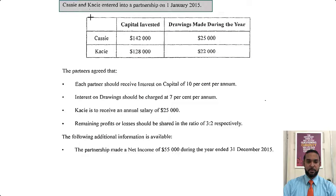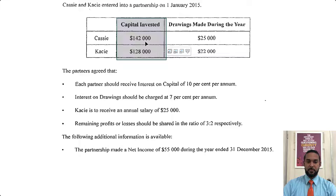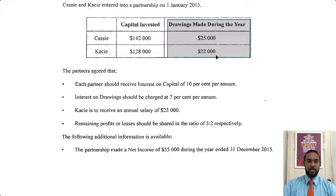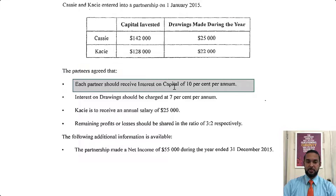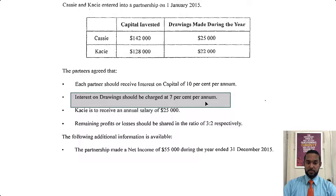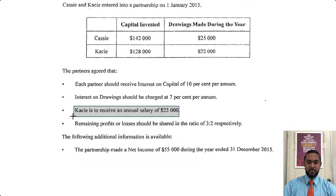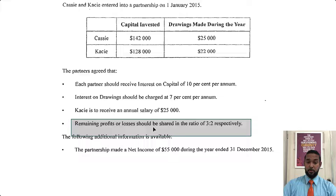So we have a partnership question. Cassie and Casey entered into the partnership on 1 Jan 2015. Capital invested: Cassie is $142,000 and Casey is $128,000. We have some drawings made during the year — $25,000 for Cassie and $22,000 for Casey. The partners agree the following: each partner should receive interest on capital of 10% per annum, interest on drawings should be charged at 7% per annum, Casey is to receive an annual salary of $25,000, and remaining profits or losses should be shared in the ratio of 3 to 2, respectively.